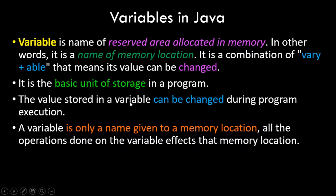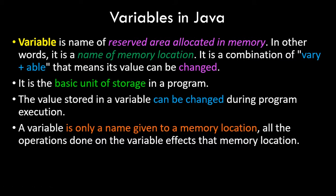It's pretty similar to the variables in algebra that you've studied. A variable is only a name given to a memory location, and all operations done on the variable take effect at that memory location. This name is just for our reference because in computer memory, locations have binary and hexadecimal addresses which you cannot remember. That's why you give an alias name to that memory location.